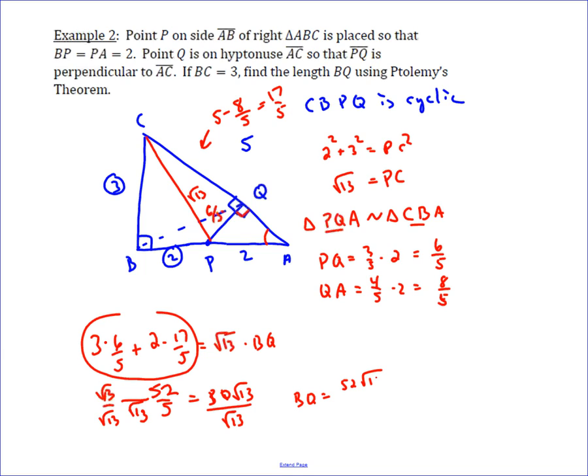Dividing both sides by √13 and rationalizing, you multiply top and bottom by √13, giving BQ = 52√13 over 65. Since 13 divides into 52, that simplifies to BQ = 4√13 over 5.